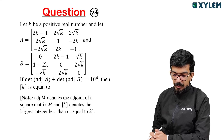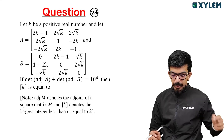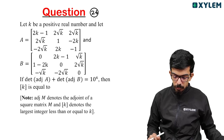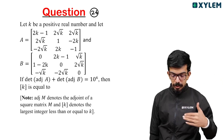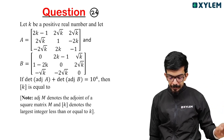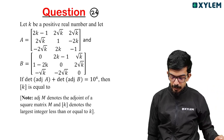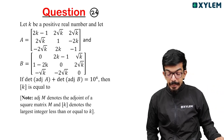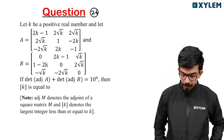Question number 26. Let k be a positive real number. Let A be the matrix with entries 2k minus 1, 2 root k, 2 root k, and B equals another matrix. The determinant of adjoint of A plus determinant of adjoint of B is equal to 10 to the power 6. Then the greatest integer of k is equal to what?